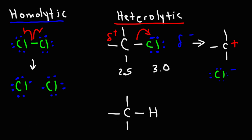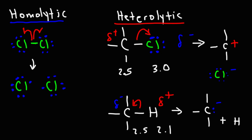Another type of heterolytic bond cleavage you'll come across in organic chemistry is when the C-H bond breaks. When that bond breaks, will the electrons go toward the carbon atom or the hydrogen atom? The electronegativity value for hydrogen is 2.1, so in the C-H bond, carbon bears the partial negative charge and hydrogen bears the partial positive charge, even though that bond is relatively nonpolar. So when the bond breaks, the electrons go to the carbon atom, giving carbon a negative charge. The hydrogen, likely abstracted by a base, just adds to that base. That's another example of a heterolytic bond cleavage.